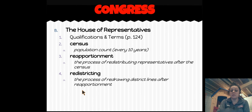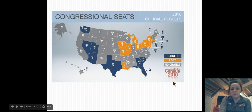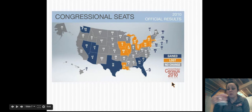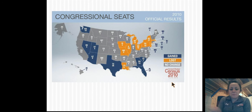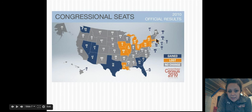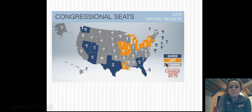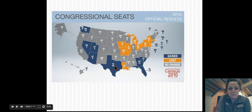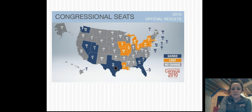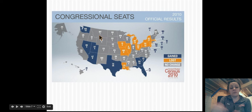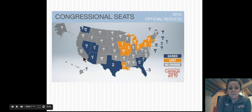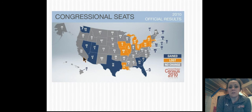I want to show you these maps quickly. This is the census map after 2010 — I'll show you a bigger one in class. Basically, every state in orange lost at least one representative after the 2010 census. Every state in navy gained at least one representative. And every state in gray had no change — they kept the same number of representatives. California has 53 representatives, and for the first time in a few decades, California did not gain a representative after the 2010 census, which was kind of a big deal.